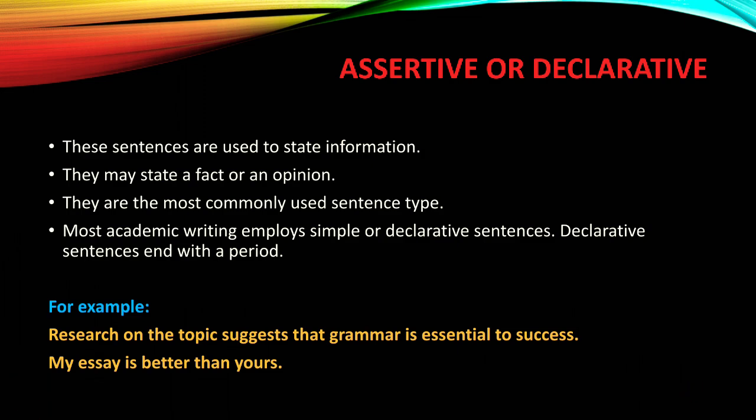Assertive or declarative sentences are used to state information, i.e., fact. They may state a fact or an opinion. They are the most commonly used sentence type. Most academic writing employs simple or declarative sentences. Declarative sentences end with a period. For example, 'Research on the topic suggests that grammar is essential to success.'